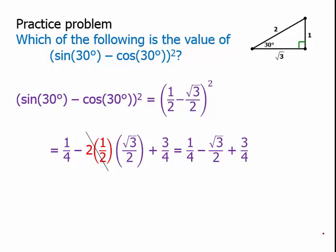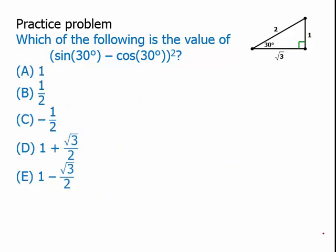Notice that we cancel the 2 and the 1/2, so that means we just have 1/4 minus √3 over 2 plus 3/4. The 1/4 plus 3/4 is just 1. So it's 1 minus √3 over 2. We go back to our answer choices, and we select that as our answer.